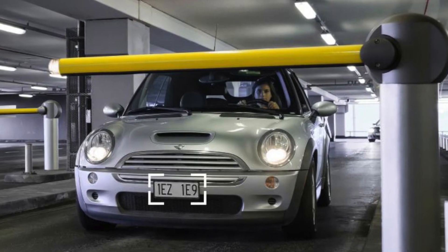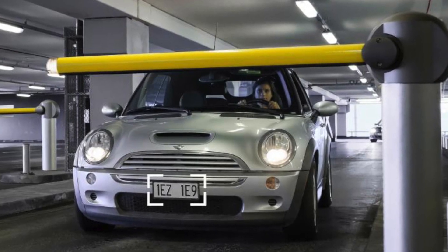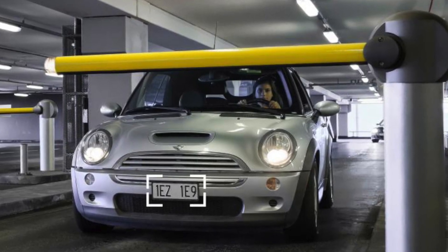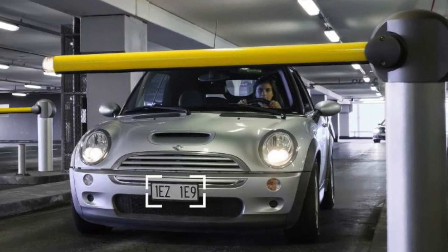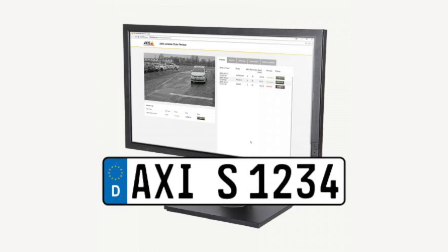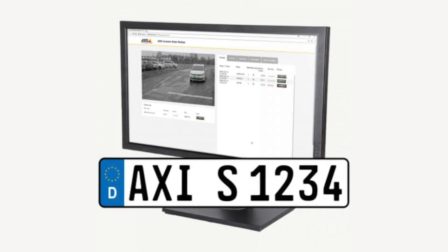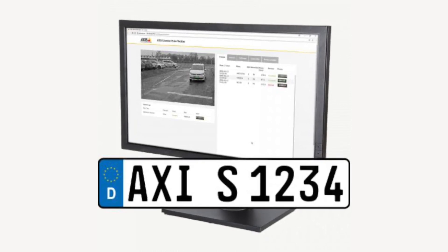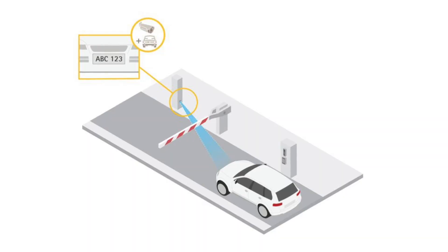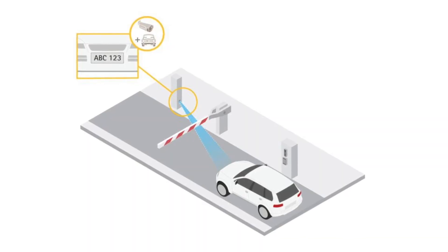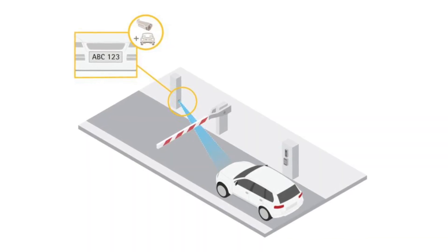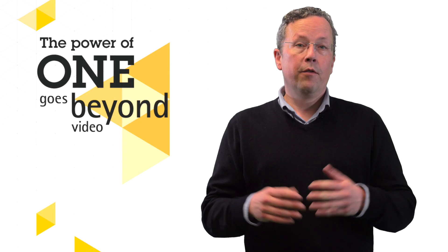Access license plate verifier is a way to grant access to a vehicle entering a site. An access camera running an application reads the number plate and then checks that they are allowed to enter. If a vehicle is not on the system, the driver can use an access intercom to speak with a member of the security team.